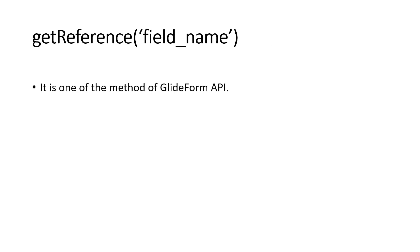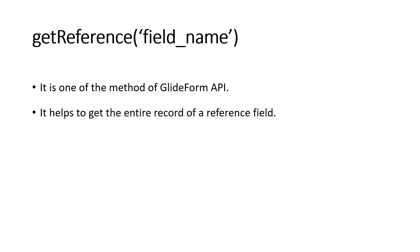getReference is one of the methods from the GlideForm API, so we declare it as g_form.getReference followed by the field name. On the incident table, reference fields include assignment group, assigned to, and caller — these store the sys_id of records from other tables. getReference helps get the entire record of a reference field. For example, if caller_id is a reference field and you call g_form.getReference('caller_id'), it retrieves the whole record of that user — first name, last name, email, company, everything.